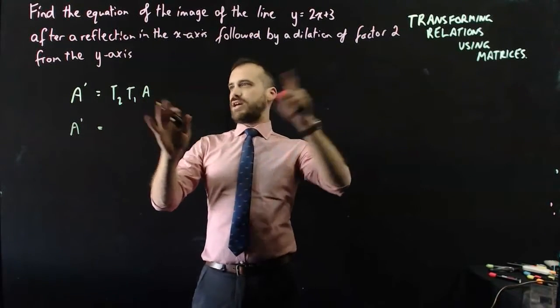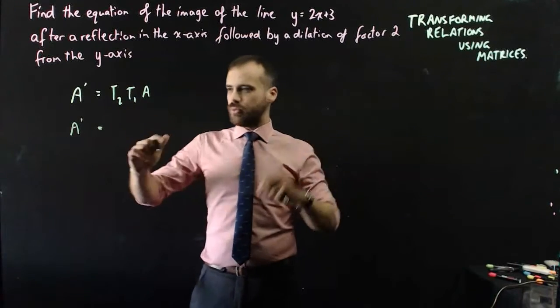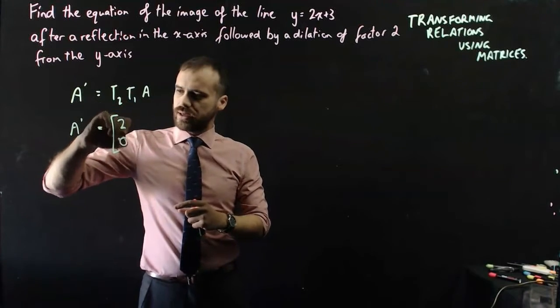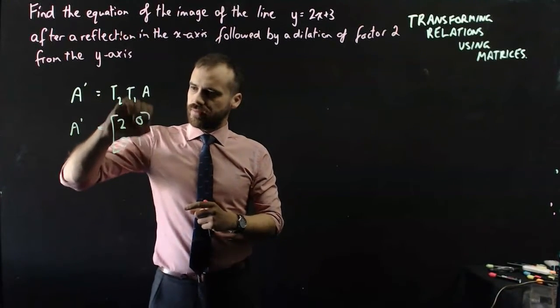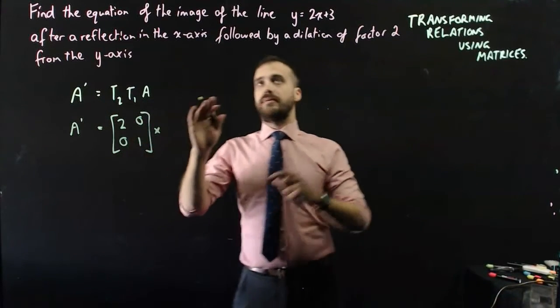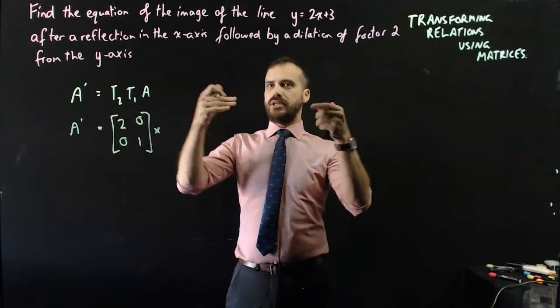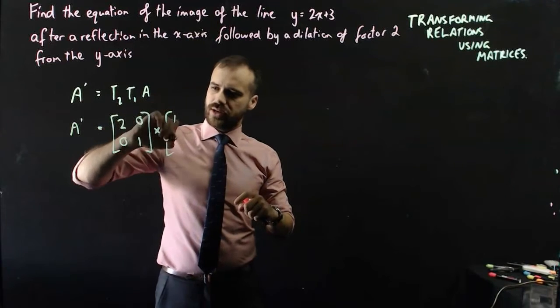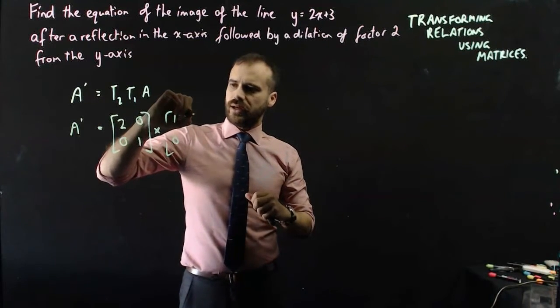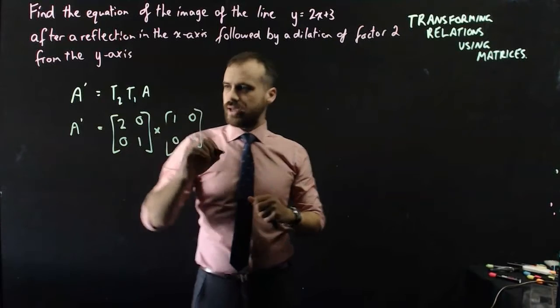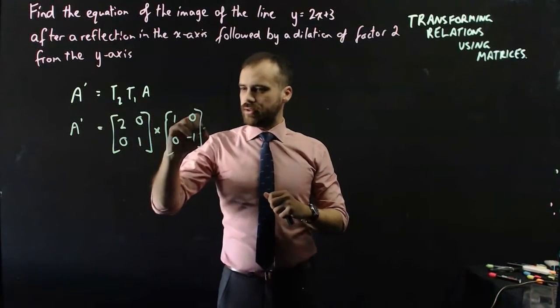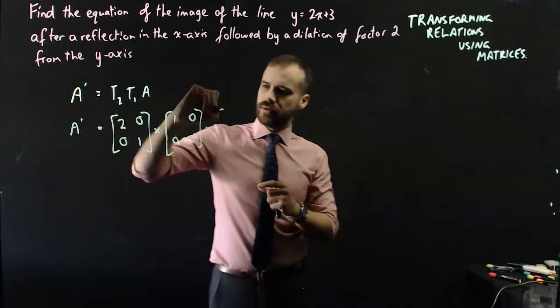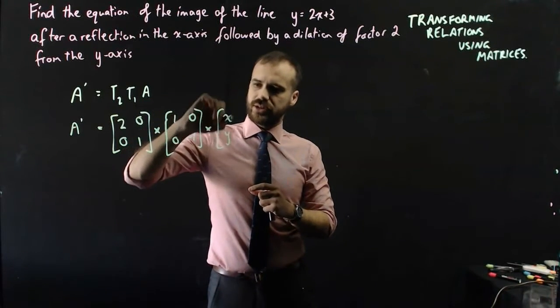Okay, so I'll keep this little image there. So dilation of factor 2 from the y-axis. So to do that it's got to be a matrix that looks like this, multiplying it by a reflection in the x-axis. So to do that I need something like 0, negative 1, and my original points, I'll just call them x and y.